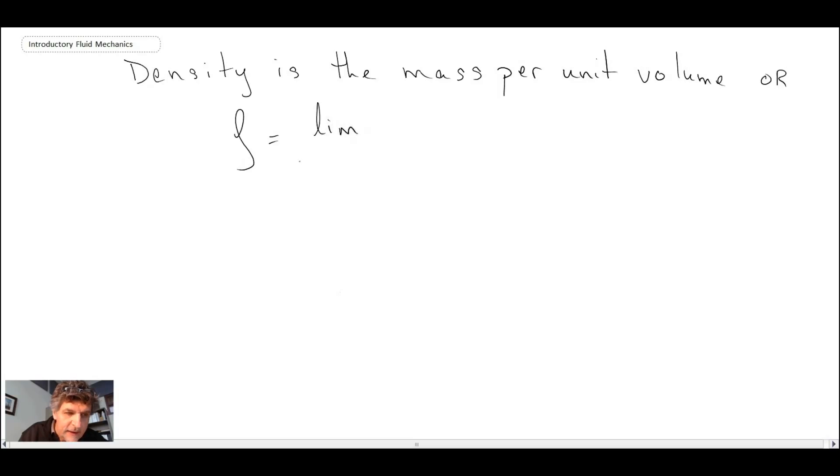We will say that in the limit as delta V, the sample volume, approaches what we call delta V star, and if we take delta M, the mass in this delta V that we're looking at, that would be the definition of density.